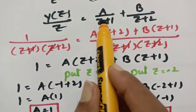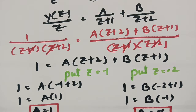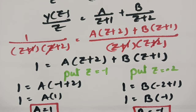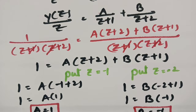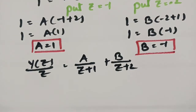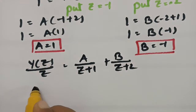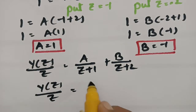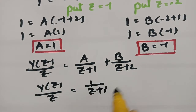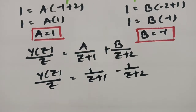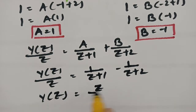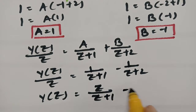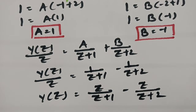Substituting A = 1 and B = -1: Y(z)/Z equals 1/(Z+1) minus 1/(Z+2). Sending Z to the numerator, Y(z) equals Z/(Z+1) minus Z/(Z+2).